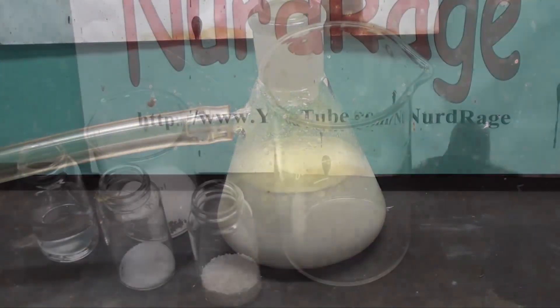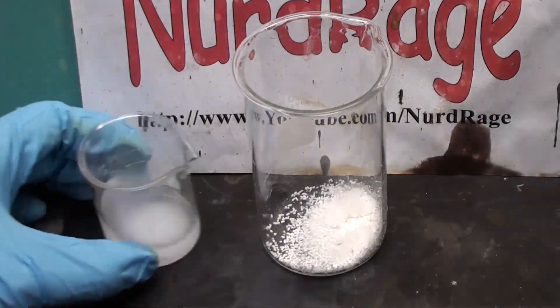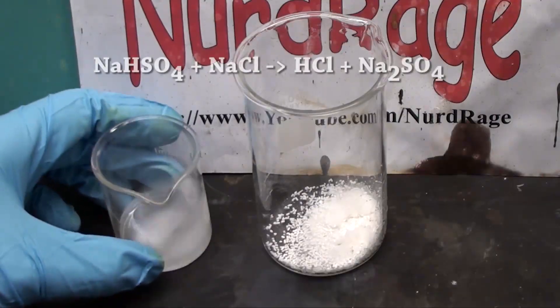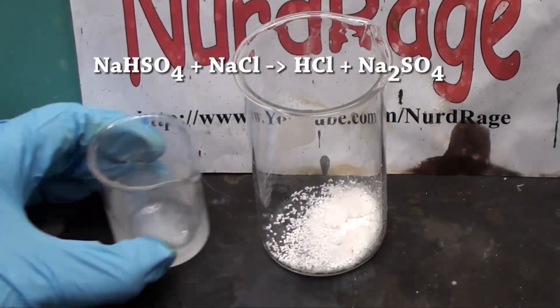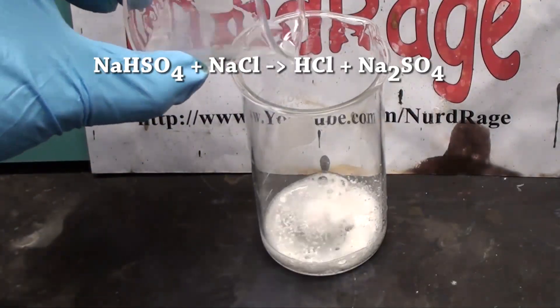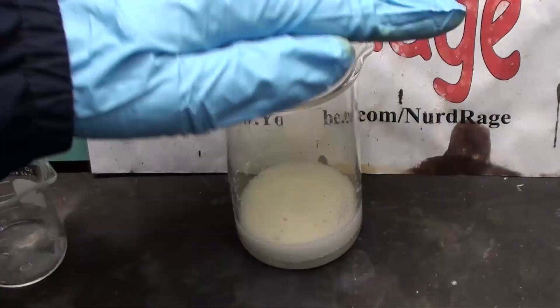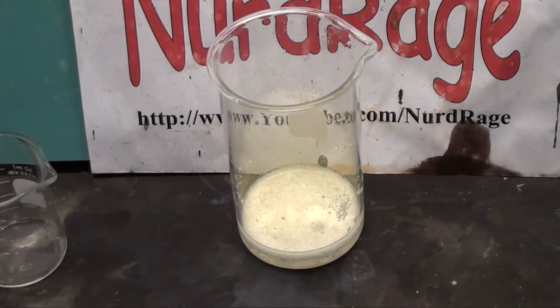Now you might not have hydrochloric acid available, but you can get around that by using sodium bisulfate and sodium chloride salt. Mixing equal amounts of both with enough water to dissolve them will produce hydrochloric acid in situ that will work to generate the chlorine gas. This is convenient if you don't want to keep too much hydrochloric acid around.